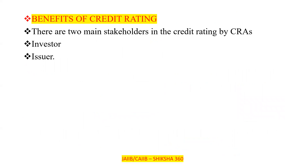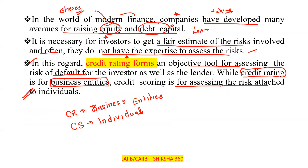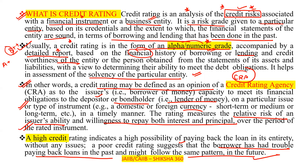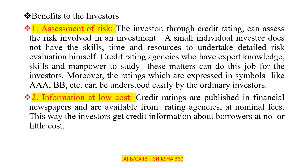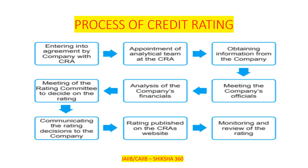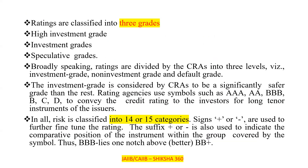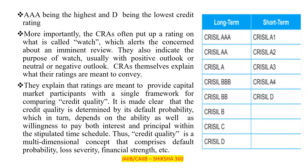The benefits of credit rating involve two main stakeholders — the investor and the issuer. In this session, we have covered: what is credit rating, credit rating agencies, history of credit rating, characteristics, and importance. In the next session, we will discuss benefits to the issuer, different credit rating agencies, the rating process, and the meaning of ratings like AAA, AA, A, and BBB, along with 10 to 15 MCQs in the group.